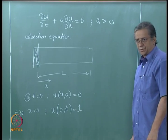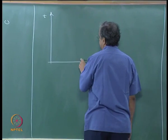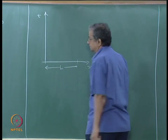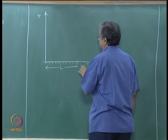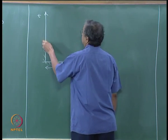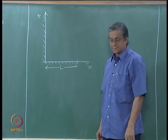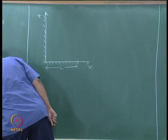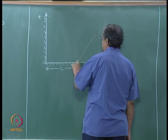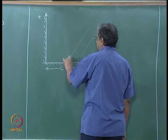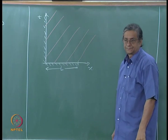In the xt-plane, we have prescribed conditions from 0 to L on the x-axis and prescribed conditions for all positive t on the left boundary. We know our characteristics go out in a particular direction — the characteristic going out to the right. This is the orientation of the characteristics.